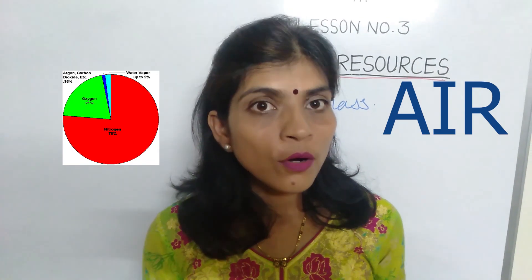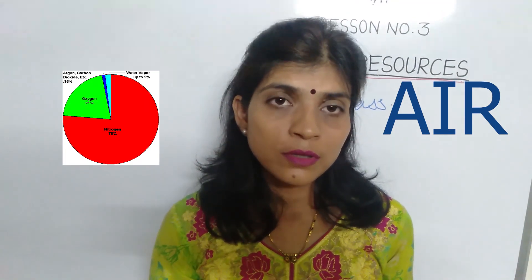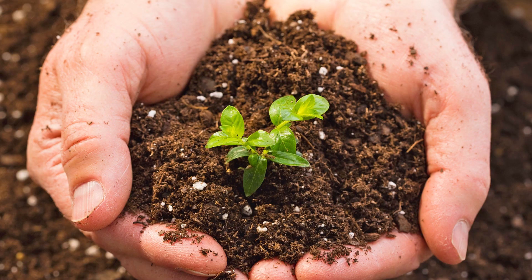So air is also a resource. Not only that, but our bodies are made up of proteins and carbohydrates, which in turn are made up of carbon, oxygen, and nitrogen — and the source of oxygen, nitrogen, and carbon is air. So air is also a resource. Soil is also a very important resource because it helps plants to grow and also helps in water conservation.